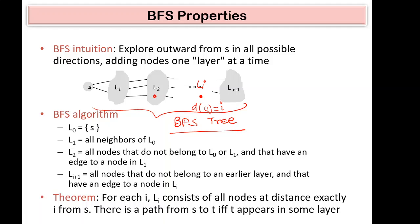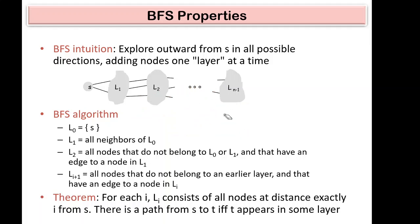This also means there is a path from s to t if and only if t appears in some layer. If t is in level Li, it means t is reachable from s and is exactly i steps away. Any node which does not appear in any layer is unreachable — we cannot reach it from the source.